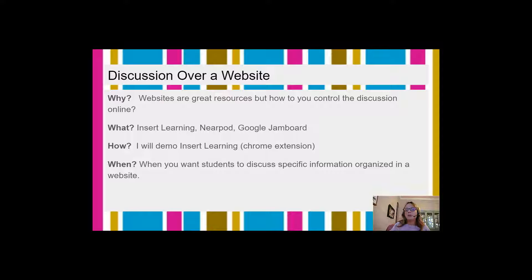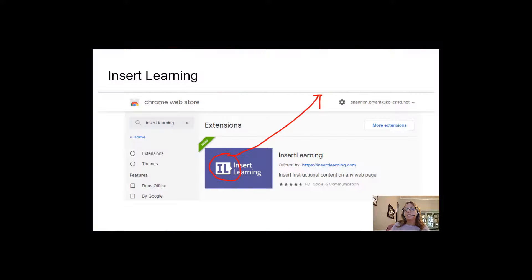Okay, and of course you want to use it when you give students a website. So here is how you add the Chrome extension Insert Learning. You go to the Chrome Store, search Insert Learning, and then once you have added it, you will see this icon right here appear up at the top of your bar. Now, whenever you are in a website, you just click on that and you can use all the tools. So we're going to watch a little demo of that now.